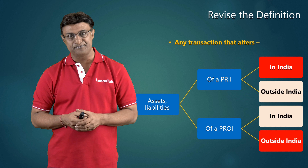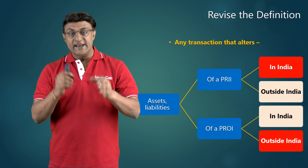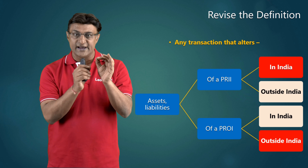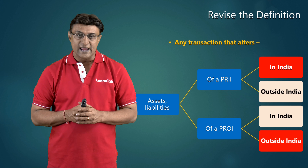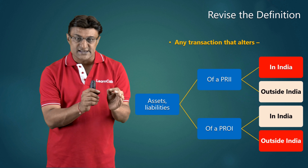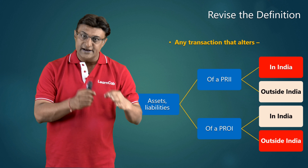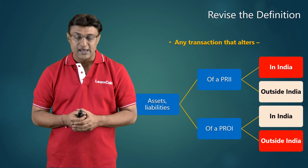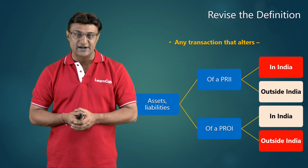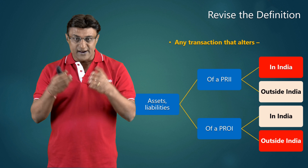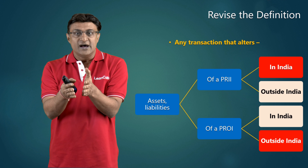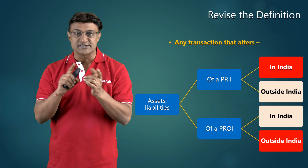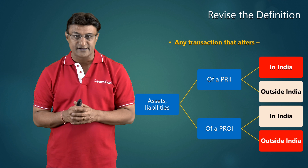That is why the definition streams down to only these two relevant combinations. Although we say assets and liabilities as a broad term, we are focusing harder on immovable property — land, buildings, or both. Immovable properties are basically the main subject matter for discussion, though assets and liabilities is a very large term overall.